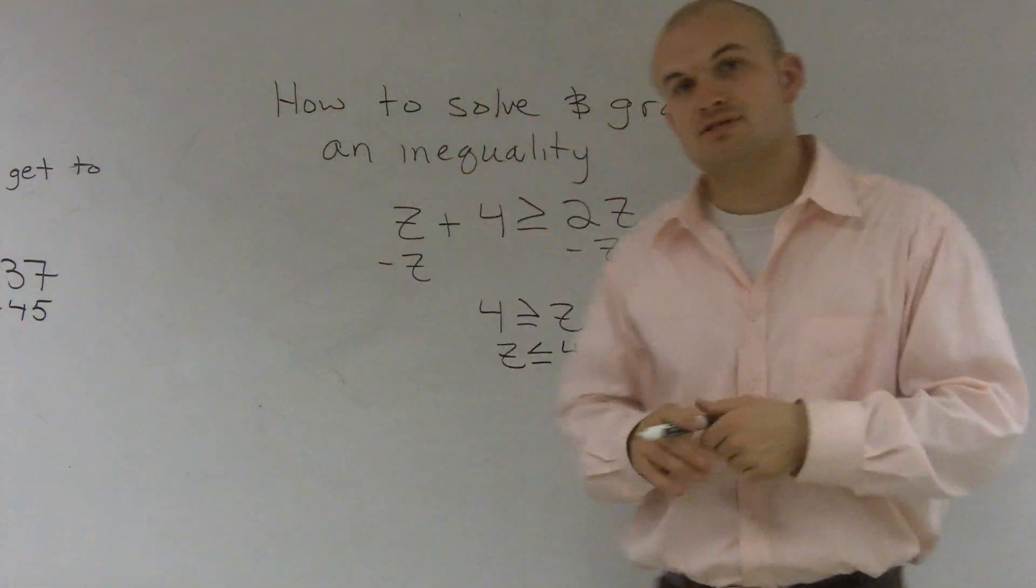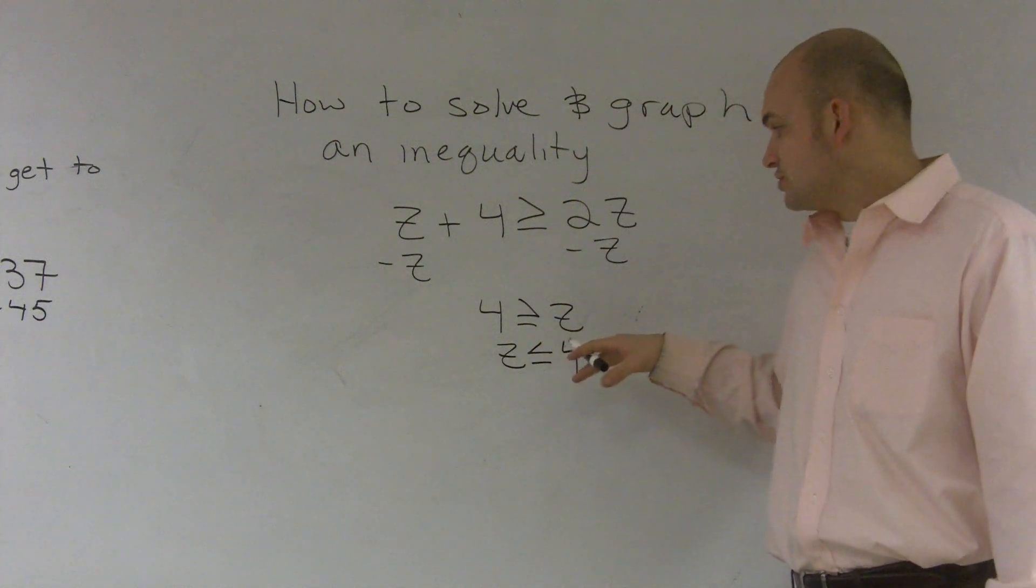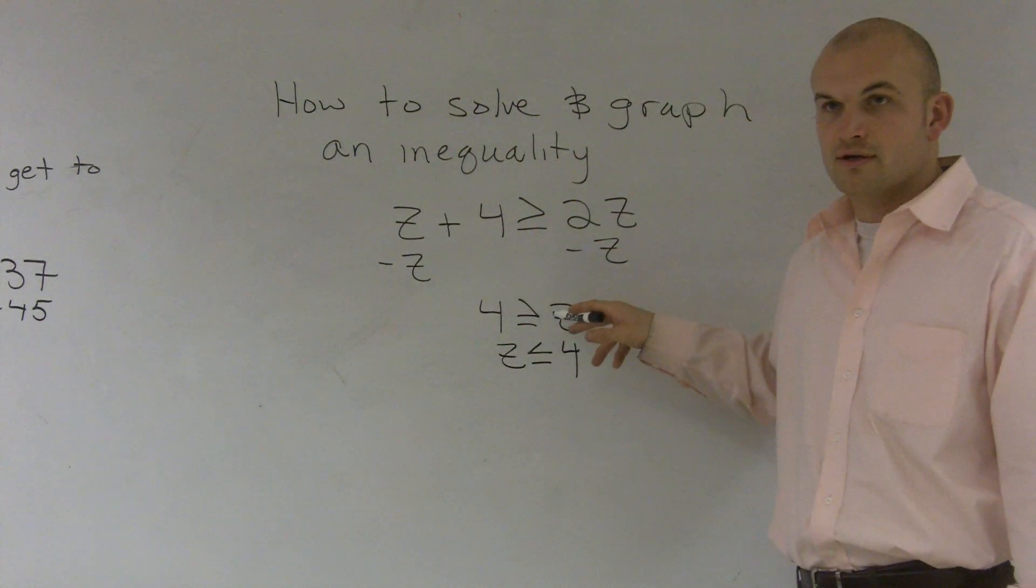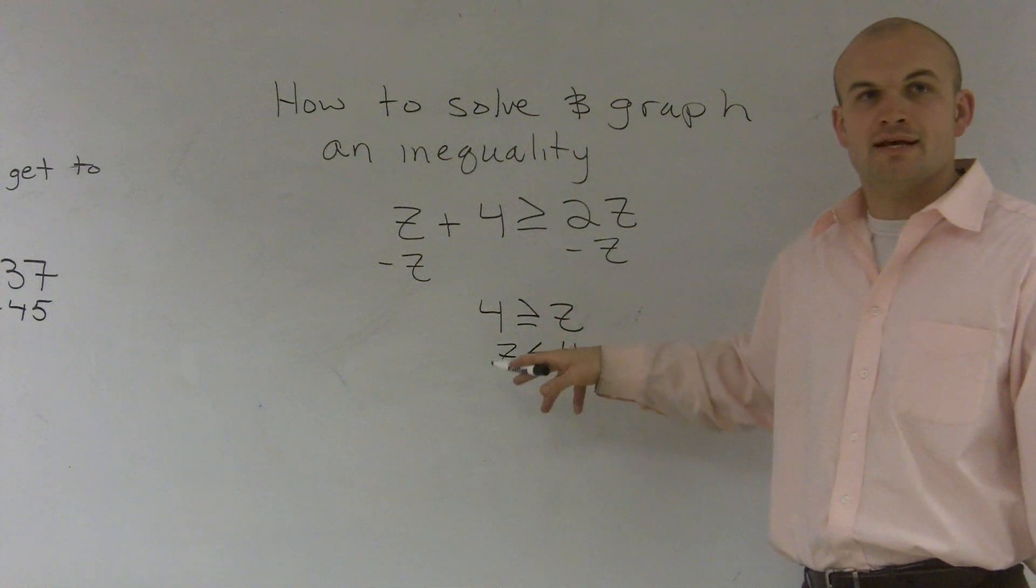If you guys look at my symbols, I haven't really changed anything. I have z is still less than or equal to 4. It's just now I'm reading the z first.